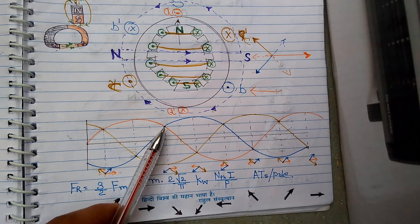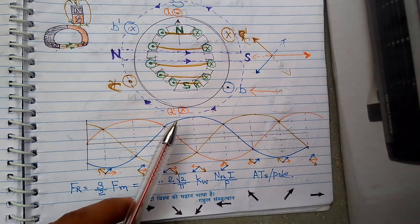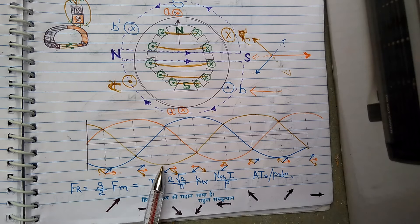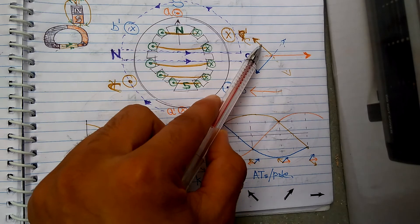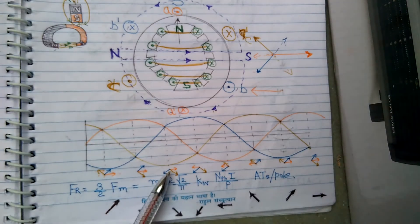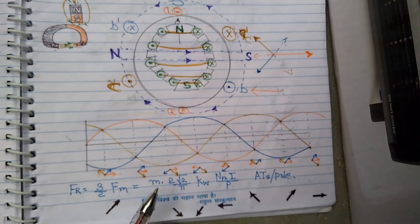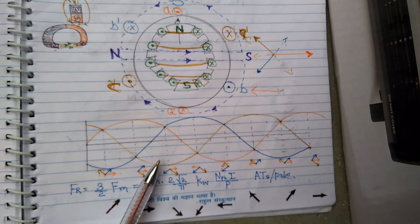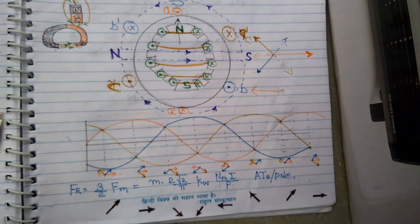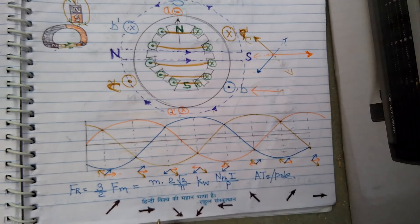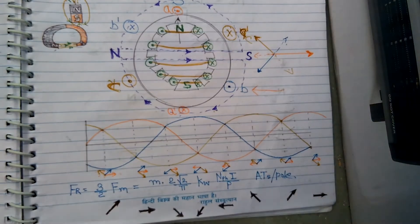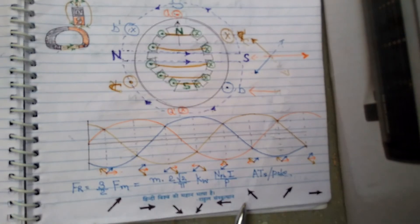At the next position, R phase is carrying current in the positive direction, while Y and blue are carrying current in the negative direction. The resultant of these three comes in this direction. Here, A phase is carrying the maximum current, so the direction of the resultant MMF is in the direction of A phase. At another position, R and blue are carrying current in the positive direction while yellow carries current in the negative direction. The resultant comes in this direction, and again Y phase is carrying maximum current, so the resultant MMF is in the direction of Y phase — confirming the principle at different points.